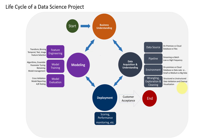At times we also end up with an imbalanced dataset. For example, in the diabetes case, an imbalanced dataset could be 100 patients having diabetes and 900 patients not having diabetes. In this case, one side of the dataset is very biased, and our model may not perform well. These imbalance issues should be handled during the feature engineering process.